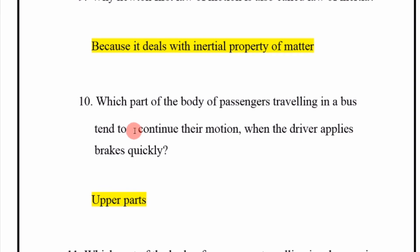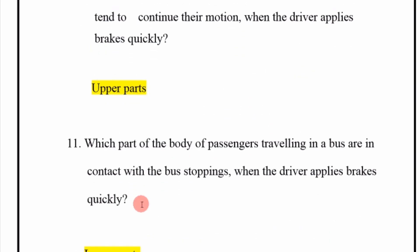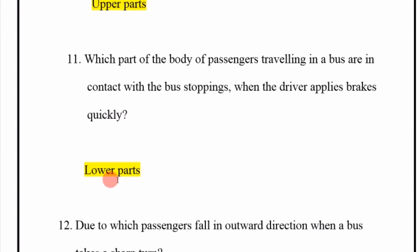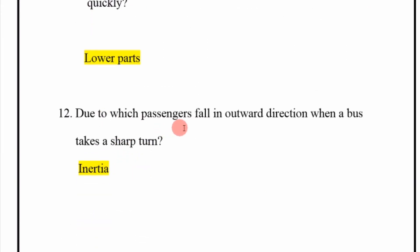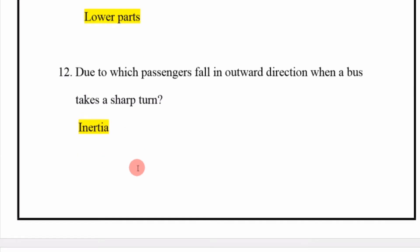When a bus driver applies the brake quickly, the upper part of passengers' bodies tends to continue their motion, while the lower parts are in contact with the bus and stop. When a bus takes a sharp turn, passengers fall in the outward direction due to inertia.